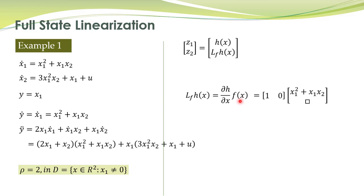The partial derivative of this thing with respect to x1 is 1, with respect to x2 it is 0. And here is f of x. I have not written the second entry of this vector because whatever is there multiplied with 0 will be equal to 0. So this is equal to x1 square plus x1 into x2.